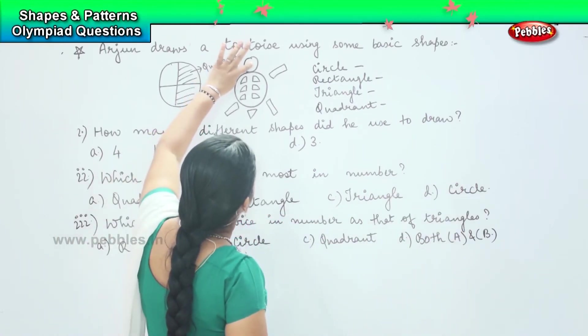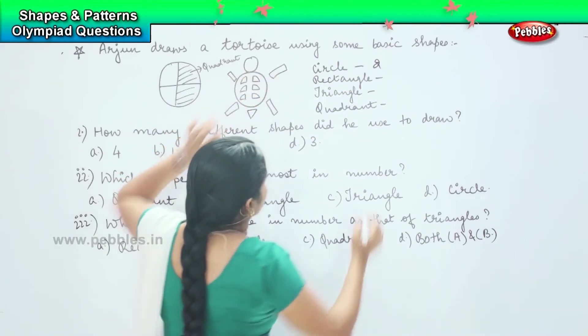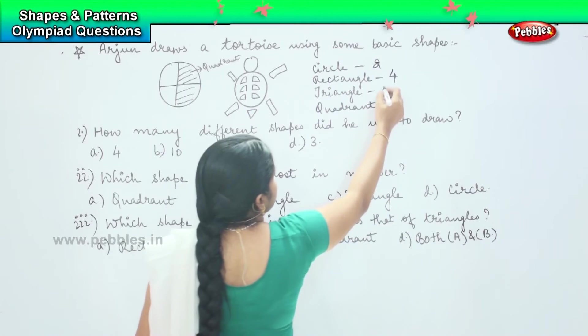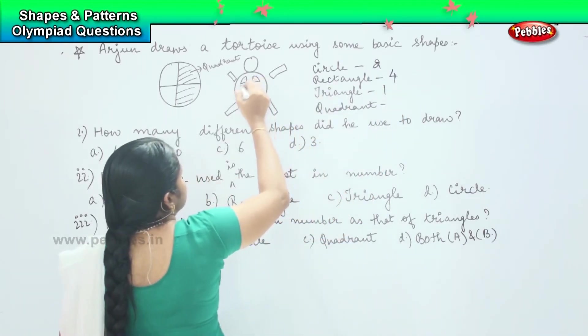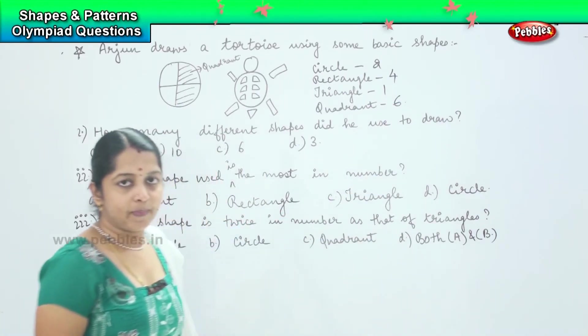So circle is 1 and 2. So he has used two circles. 1, 2, 3, 4. He had used four rectangles. There is only one triangle and 1, 2, 3, 4, 5, 6. He has used six quadrants.